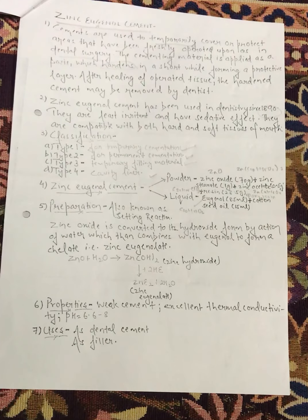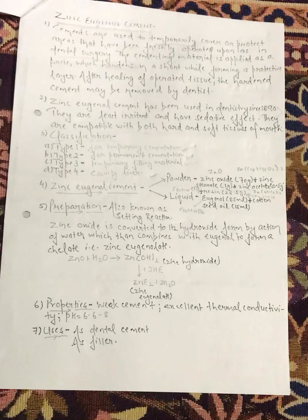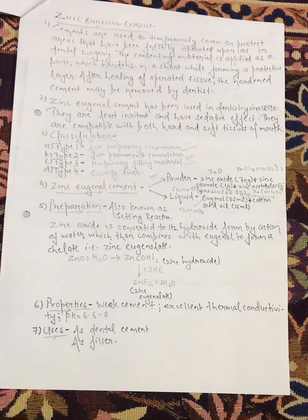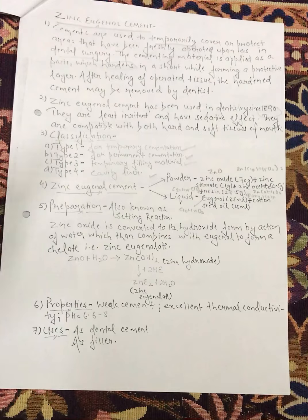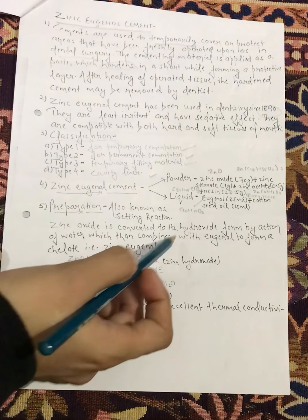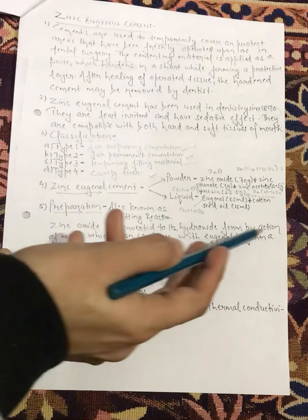Now, we will study drugs. If we have any topic about organic pharmaceutical chemistry, we will have a drug which we will study. So now, we have zinc eugenol cement. Zinc eugenol cement is our preparation and its properties. In preparation, it is also known as setting reaction. In setting reaction, we will make zinc oxide convert into hydroxide by the action of water.